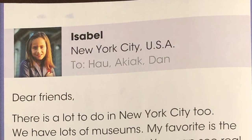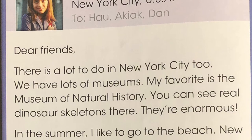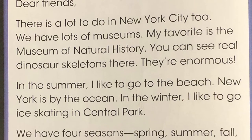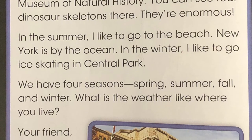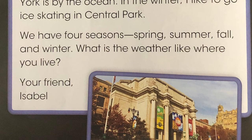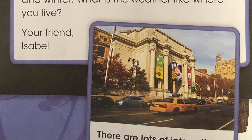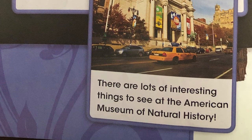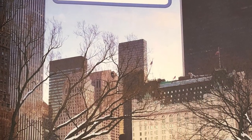Isabel, New York City, USA. To Hao, Akiak, Dan. Dear friends, there is a lot to do in New York City too. We have lots of museums — my favorite is the Museum of Natural History. You can see real dinosaur skeletons there. They're enormous. In the summer, I like to go to the beach. New York is by the ocean. In the winter, I like to go ice skating in Central Park. We have four seasons: spring, summer, fall, and winter. What is the weather like where you live? Your friend, Isabel. There are lots of interesting things to see at the American Museum of Natural History. I love going to Central Park in the winter.